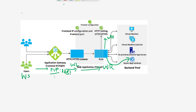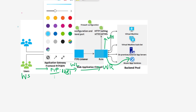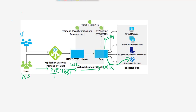Similarly, for reporting users, they use the same public IP address but on port 8082. This traffic hits a dedicated reporting listener, which forwards it to a reporting rule. The reporting rule uses a dedicated HTTP setting — the Reporting HTTP Setting (RH) — which handles communication to the back-end reporting virtual machines.